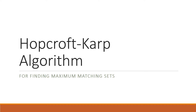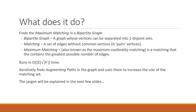Today we're going to explain the Hopcroft-Karp algorithm which finds the maximum matching set in a bipartite graph. A bipartite graph is a graph whose vertices can be separated into two disjoint sets such that nodes from one set are only connected to nodes from the other set. A matching is a set of edges without common vertices, pairing vertices from one set to vertices from another set. A maximum matching is a matching that contains the greatest possible number of edges.